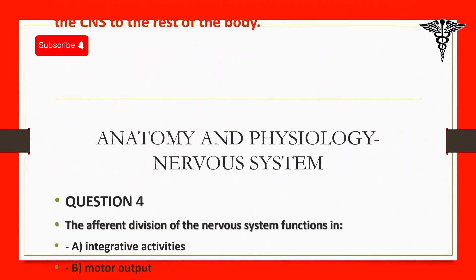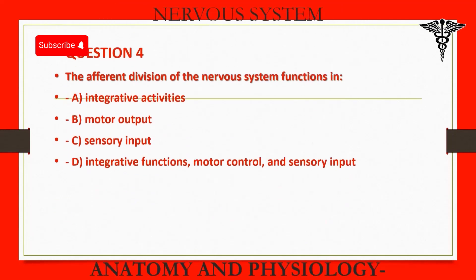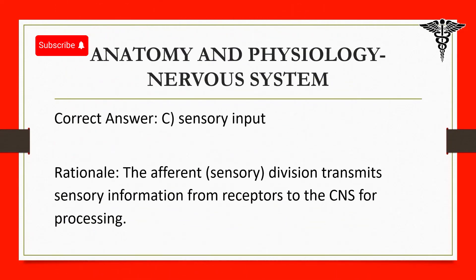Question 4: The afferent division of the nervous system functions in: A. Integrative activities. B. Motor output. C. Sensory input. D. Integrative functions, motor control, and sensory input.